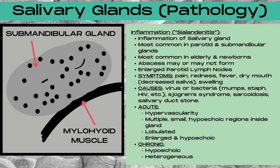Now let's talk about some of the common pathologies that can occur in the salivary glands. The first one is inflammation, also called sialadenitis. This is inflammation of one or more salivary glands, and it most commonly occurs in the parotid and the submandibular glands. It's most commonly seen in the elderly and also in newborns in the first few weeks of life. An abscess may or may not form, and you may also view enlargement of the parotid lymph nodes. Symptoms include pain, redness, fever, dry mouth from decreased saliva, and swelling. This is one of the causes of chipmunk cheeks, which are bilateral, inflamed, enlarged parotid glands.